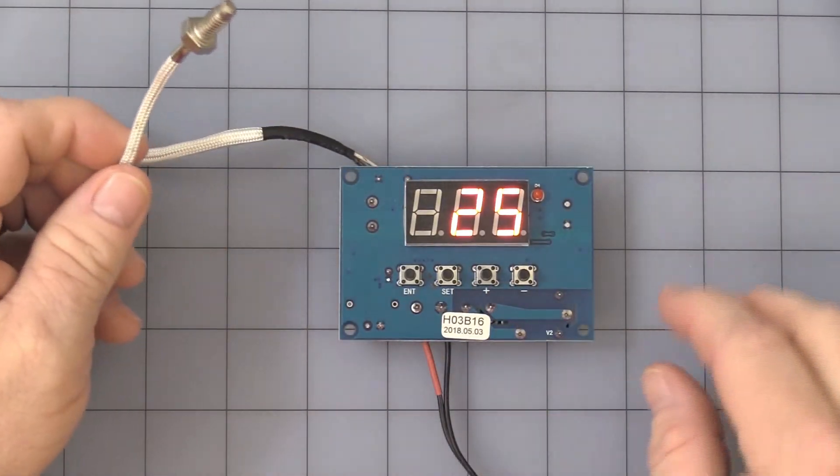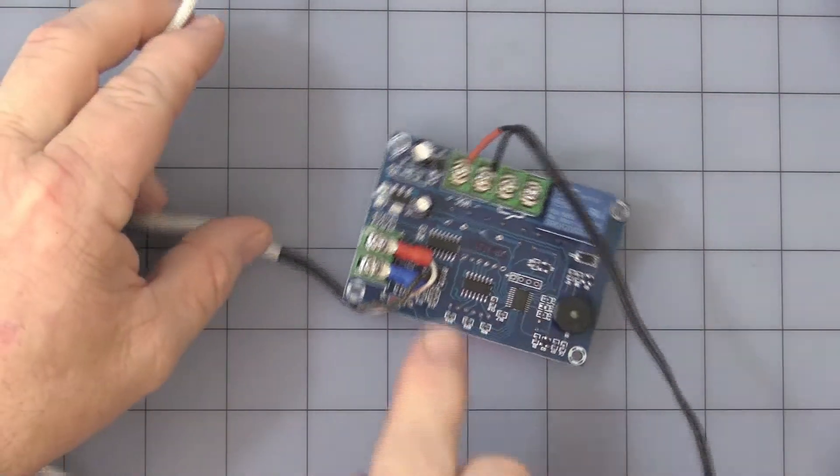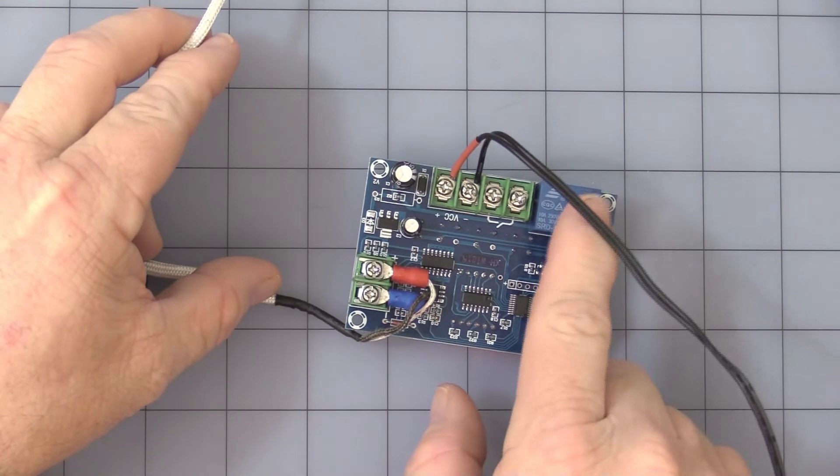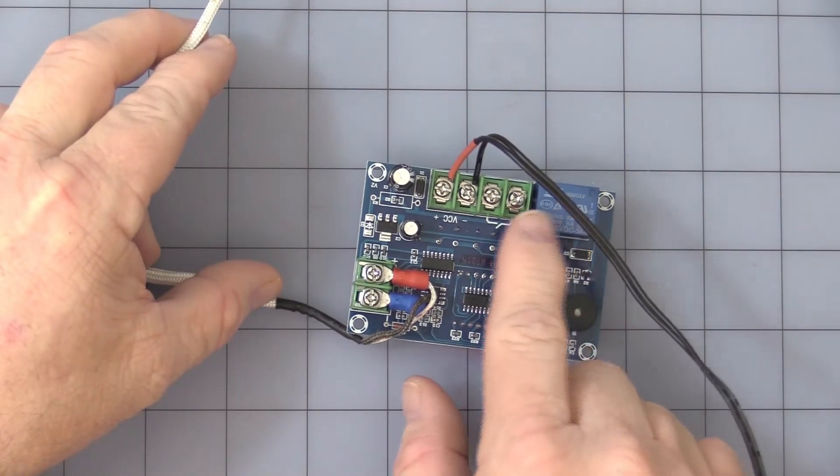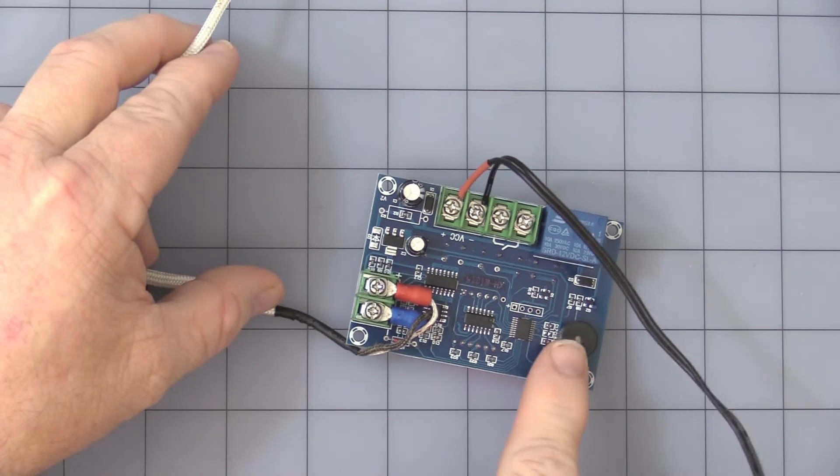Okay, let's get into the unit itself. It operates off of 12 volts DC, comes into these terminals. It has a single pole, single throw, normally open relay through these two contacts. Audible alarm.